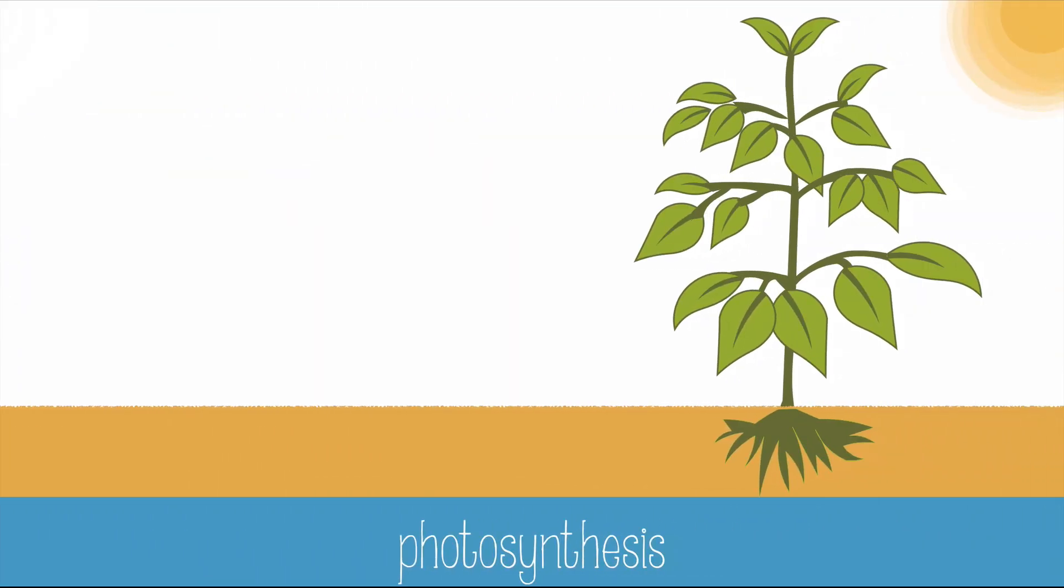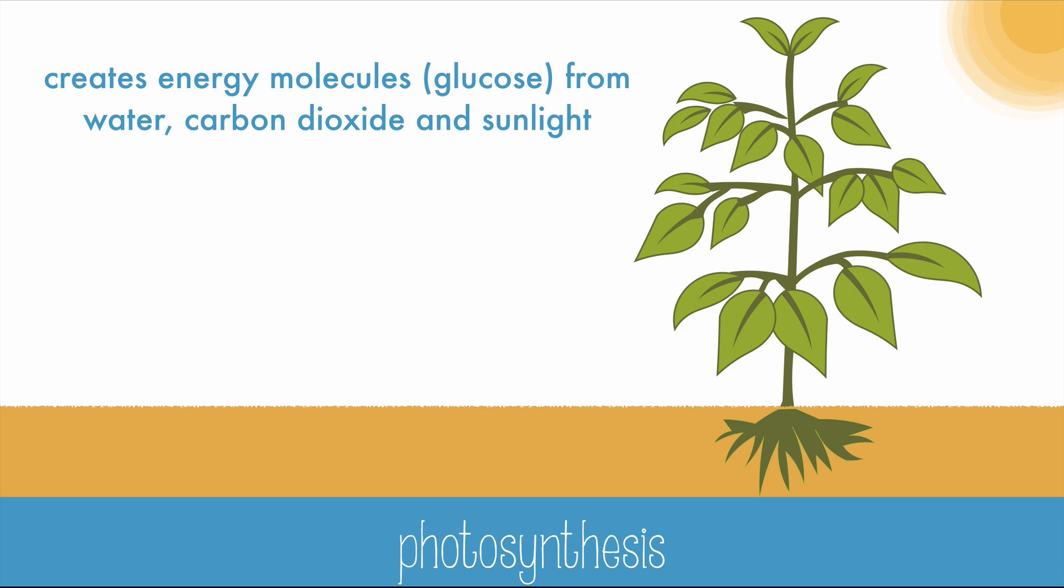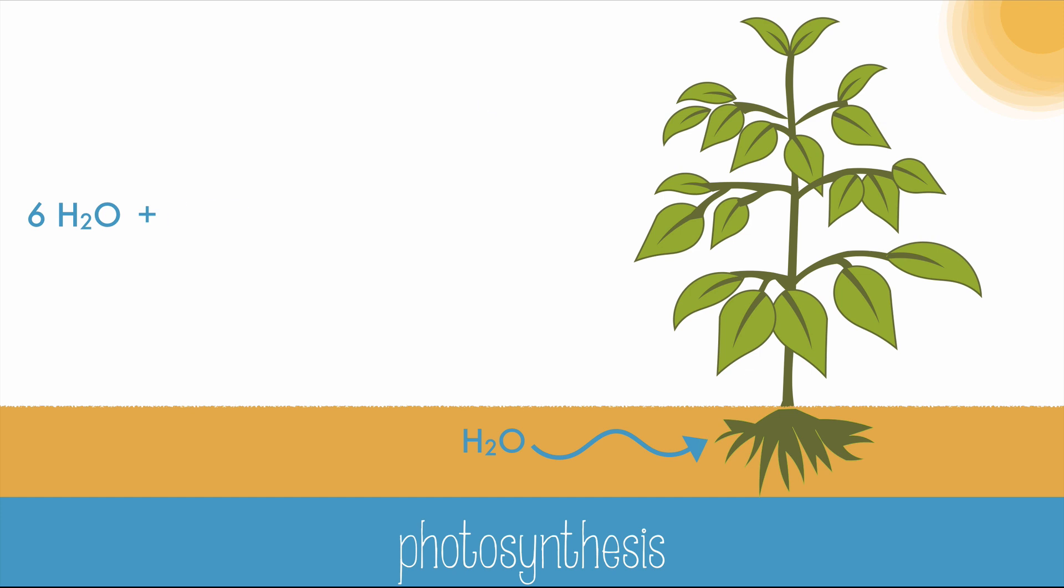Autotrophs use a process called photosynthesis to create energy molecules from water, carbon dioxide, and sunlight. For every six water molecules and six carbon dioxide molecules and the energy from the sun, plants can create one glucose molecule, or C6H12O6, and release six oxygen molecules.